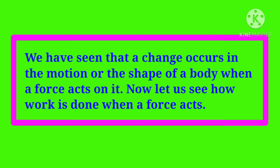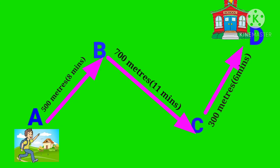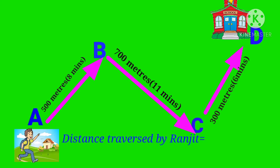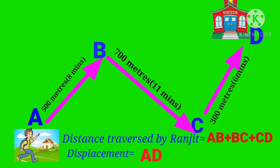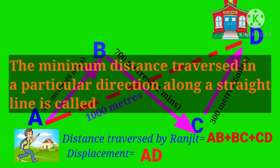Now let us see how work is done when a force acts. Distance and displacement: Ranjit's house is at place A. The figure shows the distance traversed by Ranjit to reach his school at D. If we do not take direction into account, Ranjit traversed a distance equal to AB plus BC plus CD. However, his displacement was equal to AD — the minimum distance along a straight line from his house to the school. The minimum distance traversed in a particular direction along a straight line is called displacement.